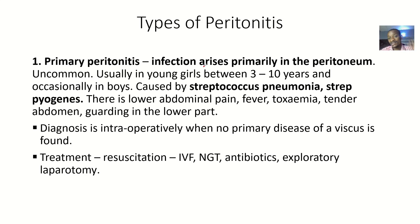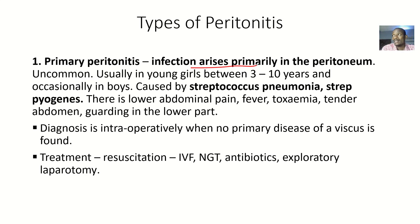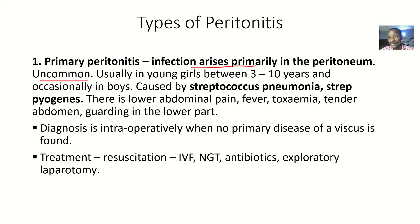For primary peritonitis, the infection arises primarily in the peritoneum. It is not something outside that is causing the peritoneum to become inflamed — the cause is right there. It is actually uncommon, because most of the time before the peritoneum becomes inflamed, it must be something outside causing it.